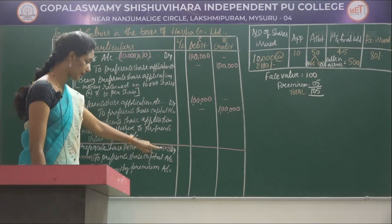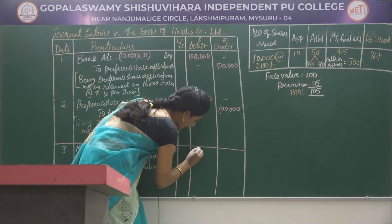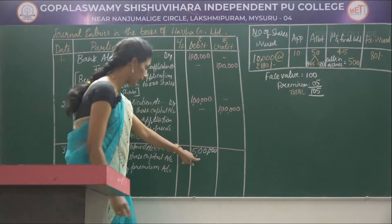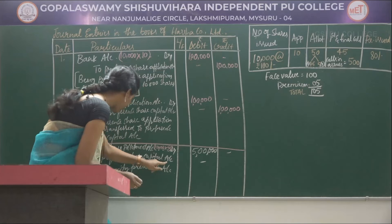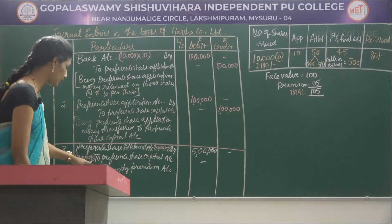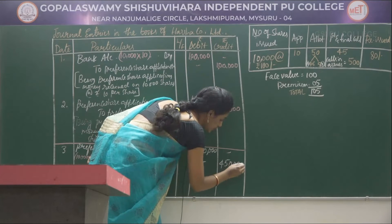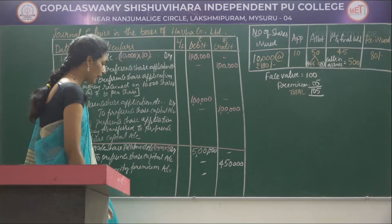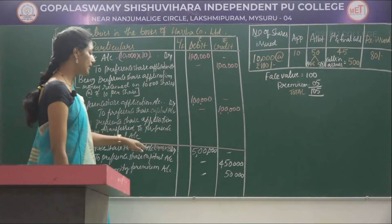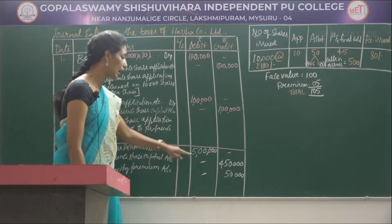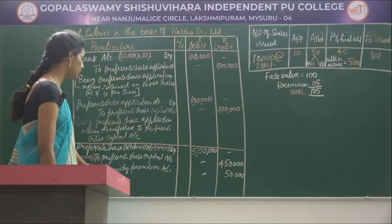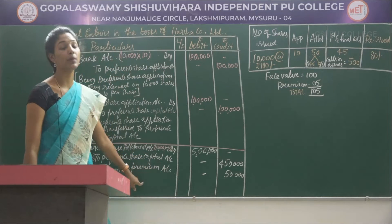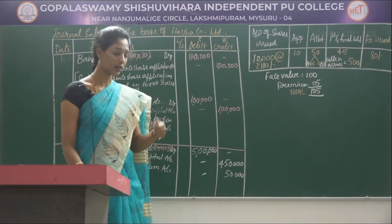Preference Share Allotment Account debited with Rs 5 lakh (10,000 × Rs 50). To Preference Share Capital Account credited with Rs 4,50,000 (10,000 × Rs 45). And to Security Premium Account credited with Rs 50,000 (10,000 × Rs 5). When shares are issued at premium it is considered as income to the company, that's why it is credited.